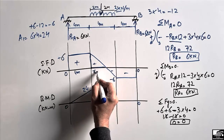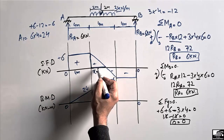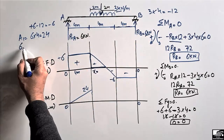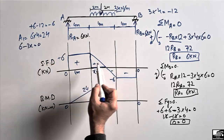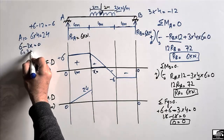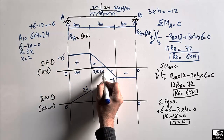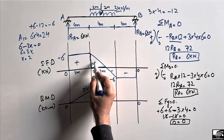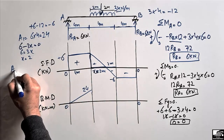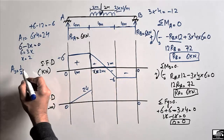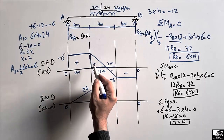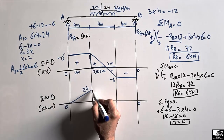Within the loaded region, the shear force passes through zero at some point x from the start of the load. Setting the shear force to zero: 6 − 3x = 0, giving x = 2 meters. So the loaded 4-meter span is split into two triangles, each with base 2 m and height 6 kN. Area A2 (positive triangle) = ½ × 2 × 6 = 6 kN·m. Adding to the previous value: 24 + 6 = 30 kN·m at the point of zero shear.